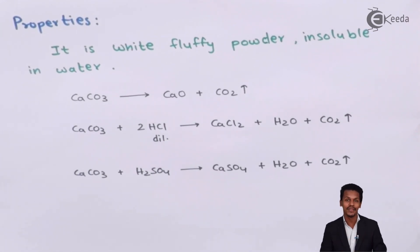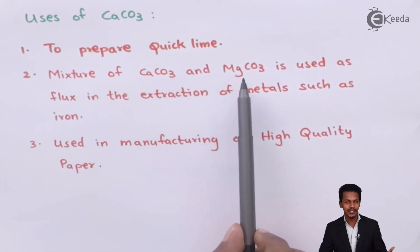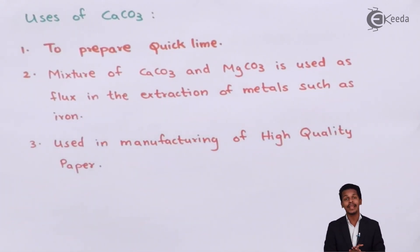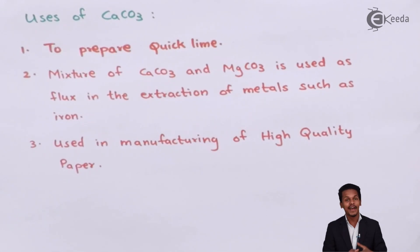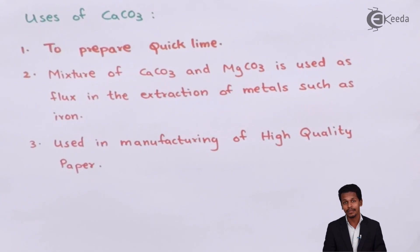Now let us mention the uses of calcium carbonate. The first use is to prepare quicklime, as we have discussed. Another important use: the mixture of CaCO3 and MgCO3 (magnesium carbonate) is used as a flux in the extraction of metals such as iron. This flux combines with impurities known as gangue, and the resulting slag is removed. This helps in the purification of metals extracted from ores.